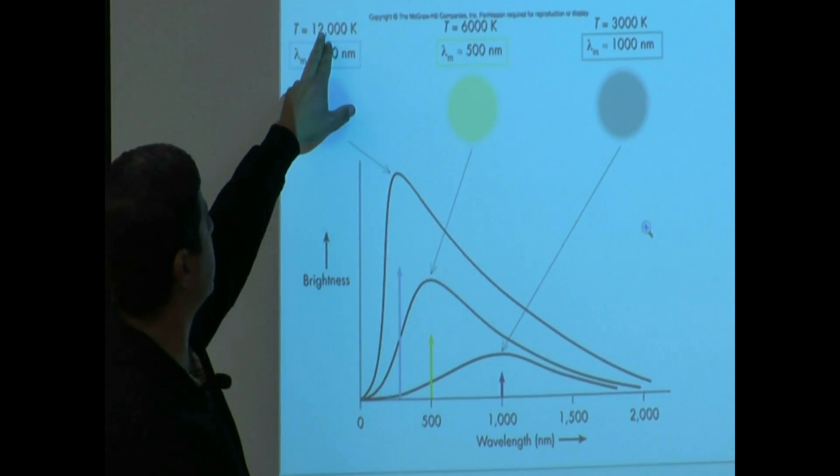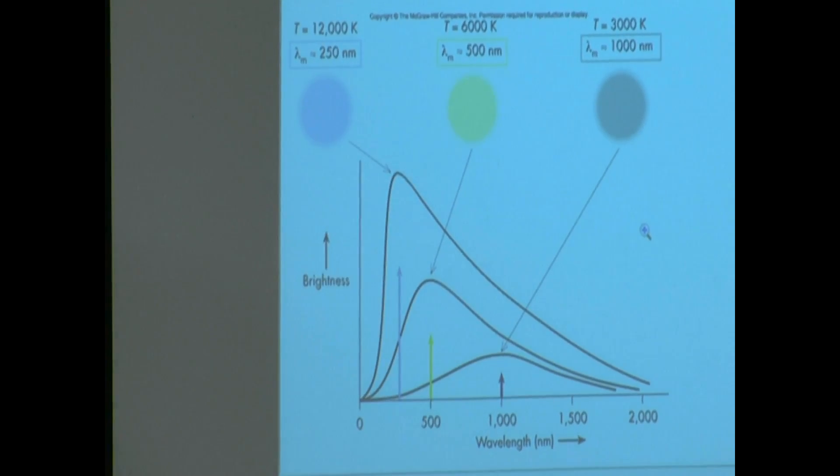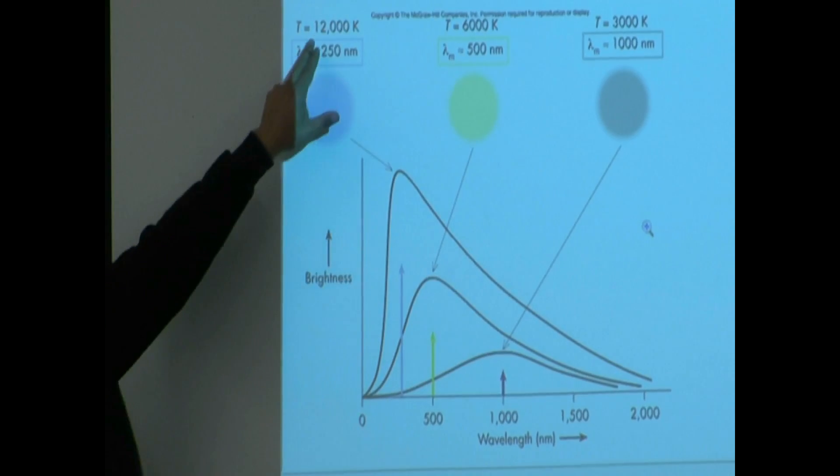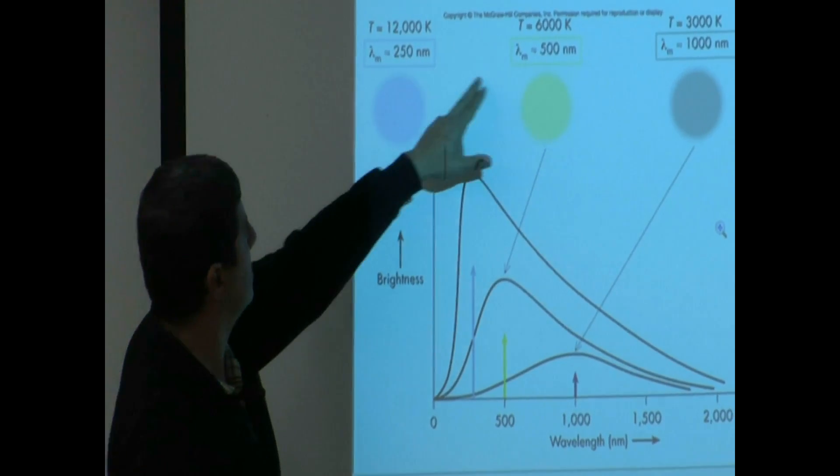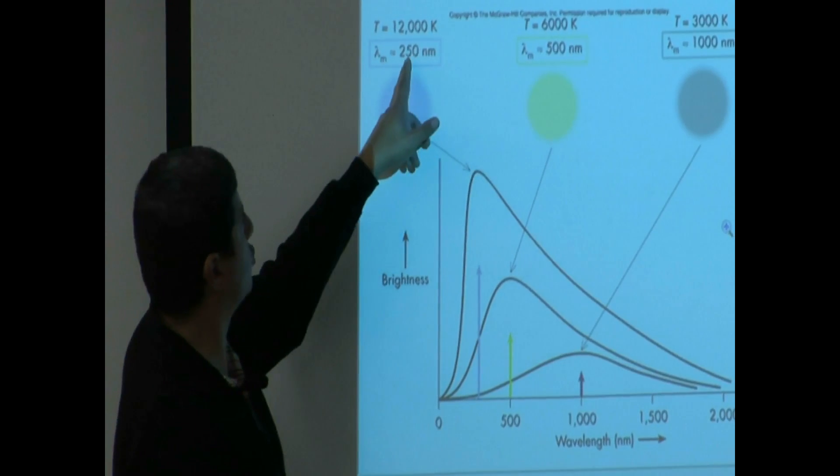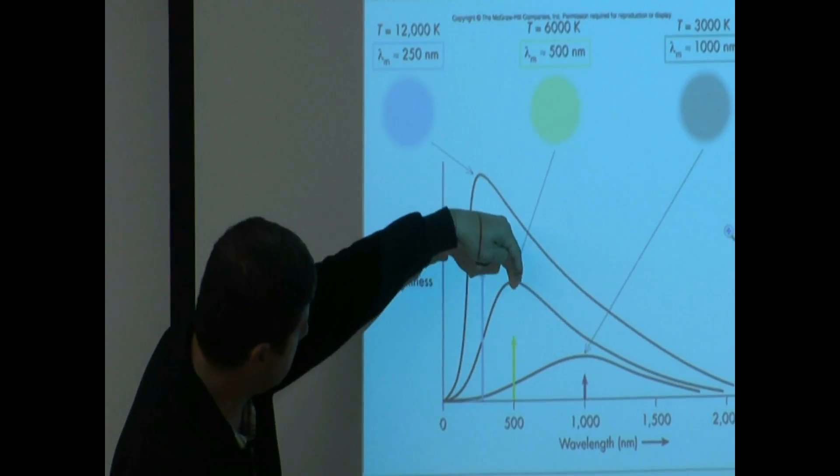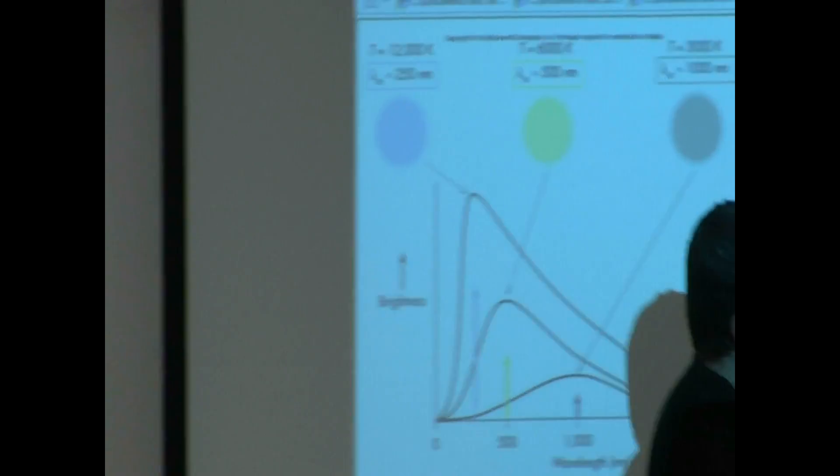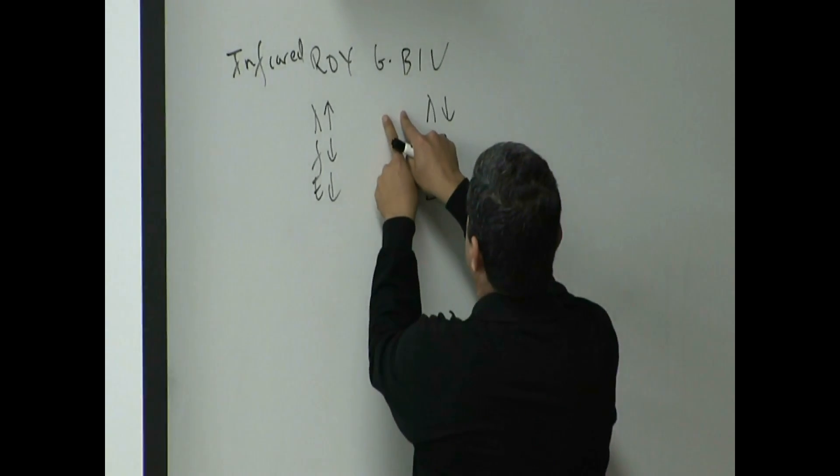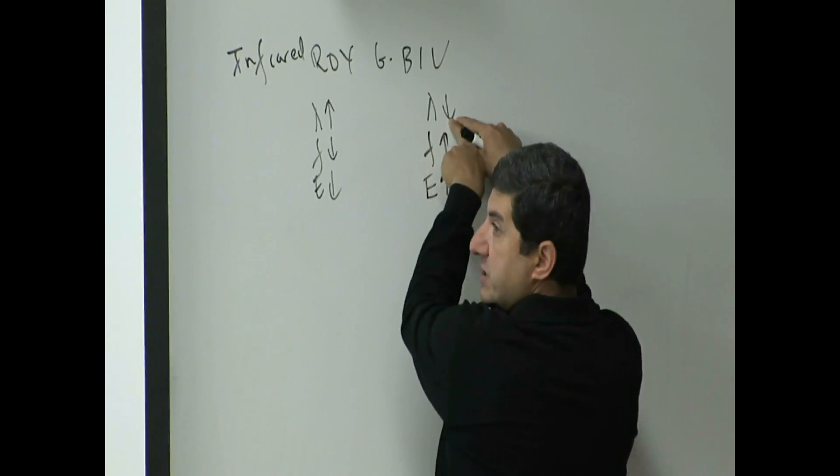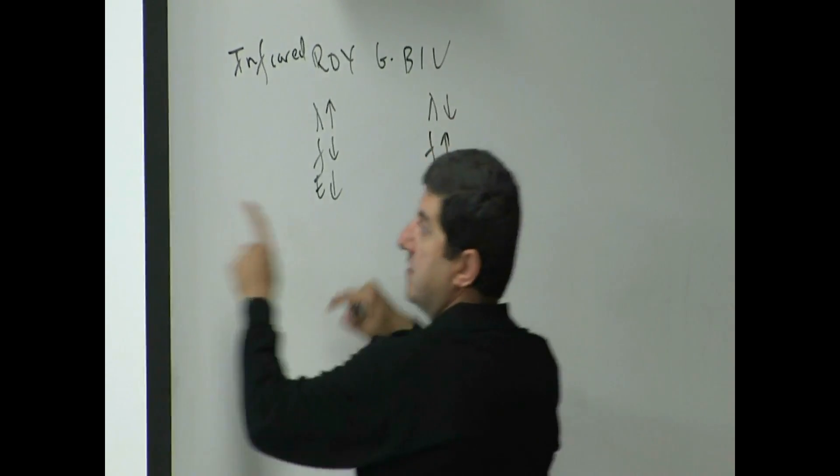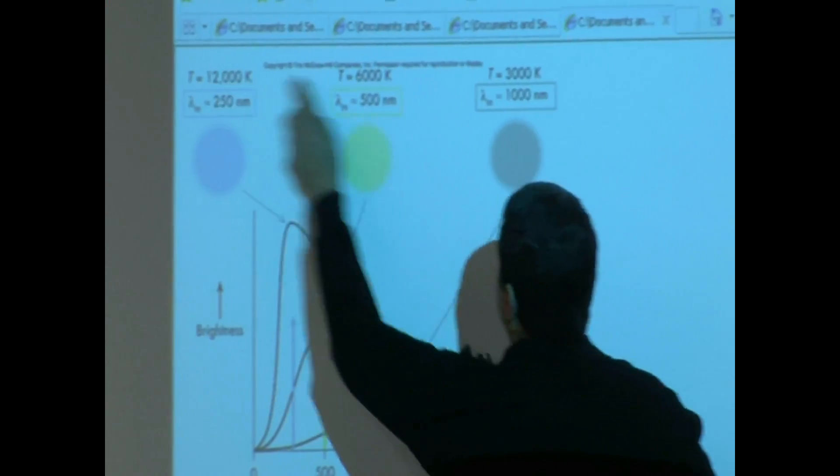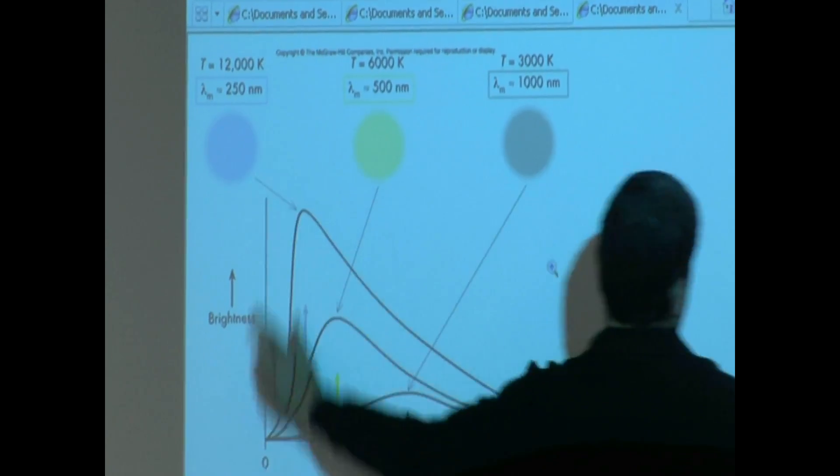Now, if I double the temperature of that star, now you have 12,000 kelvin star. Now, what is it mainly going to radiate? Cut that in half, you get 250 nanometer. So now, you go from yellow, you cut it in half, 250. So as the wavelength is decreasing, the star is looking more and more violet. You get hotter, hotter, the wavelength goes down, down. When the wavelength goes down, you get more violet.